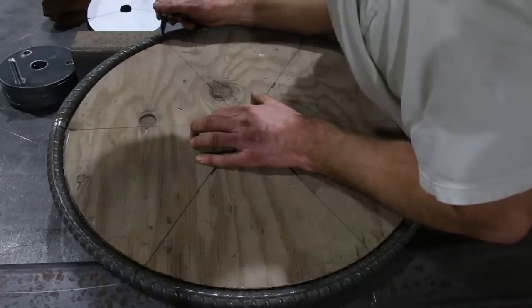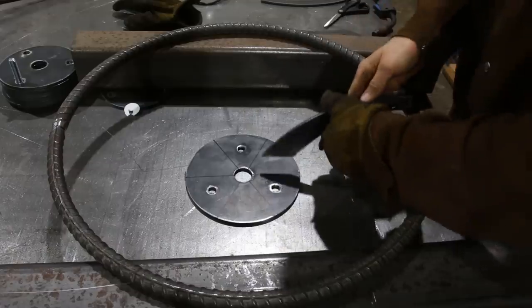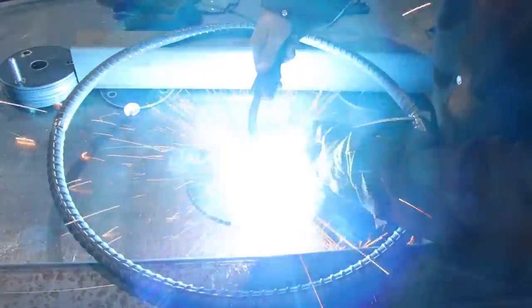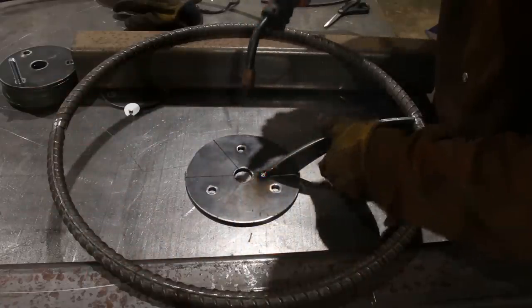Using the template again, I marked the locations of the spokes that I had previously cut and got it welded.